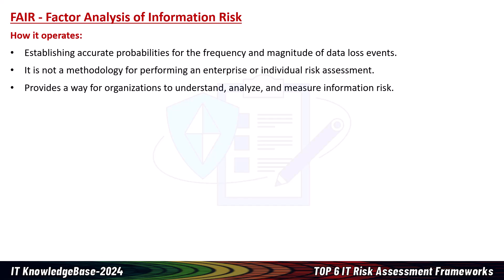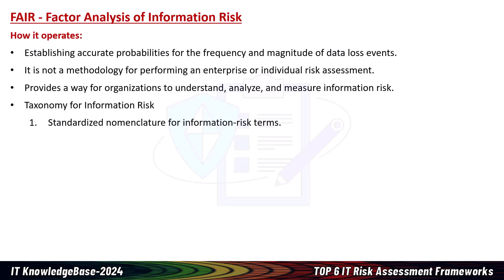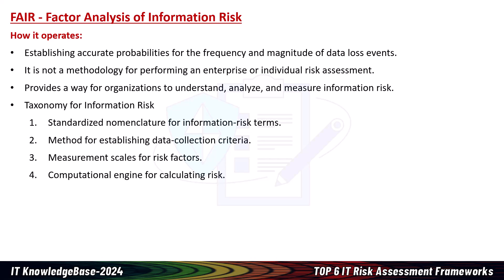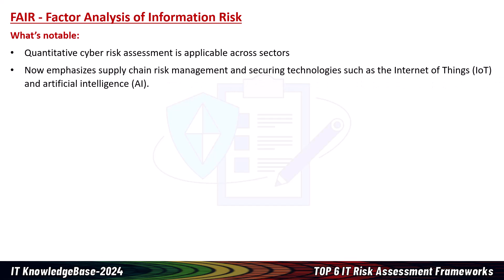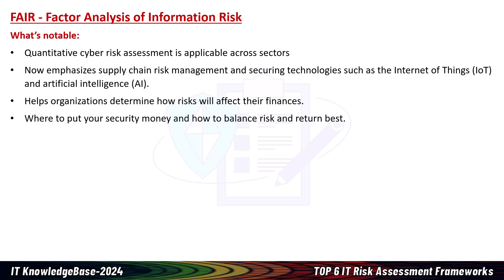FAIR provides a way for organizations to understand, analyze, and measure information risk. Components include: a taxonomy for information risk, a standardized nomenclature for information risk terms, a method for establishing data collection criteria, a measurement scale for risk factors, a computational engine for calculating risk, and a model for analyzing complex risk scenarios. FAIR's quantitative cyber risk assessment is applicable across sectors and emphasizes supply chain risk management and securing technologies such as IoT and AI. Because it uses a quantitative risk management method, FAIR helps organizations determine how risk will affect their finances and helps balance risk and return.